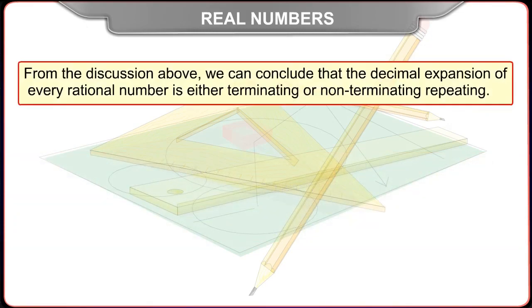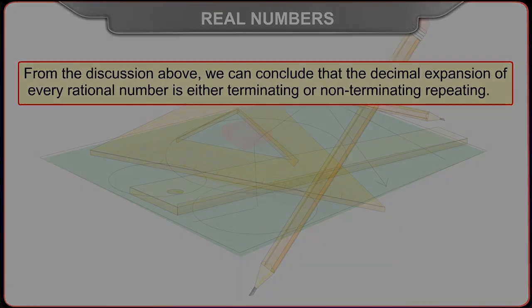From the discussion above, we can conclude that the decimal expansion of every rational number is either terminating or non-terminating repeating.